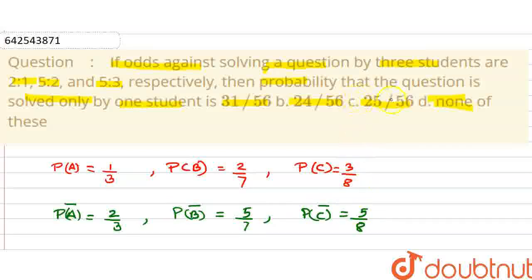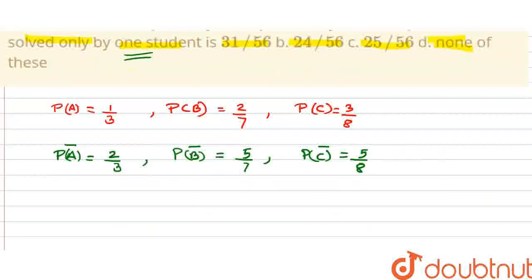Now we have to find the probability that the question is to be solved only by one student. That can be written as the probability that the question may be solved by any one student - either it will be solved by A and not by B and C, or it will be solved by B not by A and not by C, or it will be solved by C not by B and not by A.